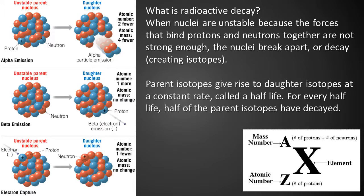Beta emission is a radioactive process in which a proton is converted to a neutron or vice versa. As a result of this transformation, an electron is emitted from the parent isotope. Because the daughter isotope has a different number of protons than the parent, it becomes a different type of element or atom. Electron capture is a process in which a proton-rich nuclide absorbs an inner atomic electron, thereby changing a nuclear proton to a neutron and simultaneously causing the emission of an electron. While the number of protons changes and the daughter isotope becomes a different atom, because the proton turns into a neutron of the same mass, the atomic mass does not change.